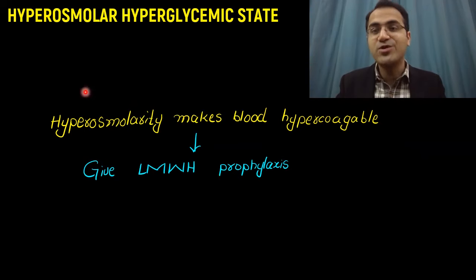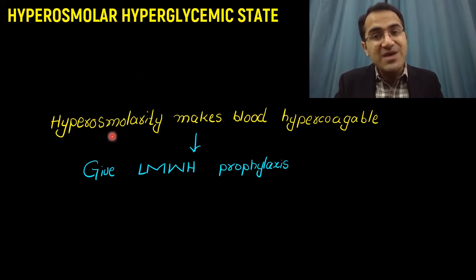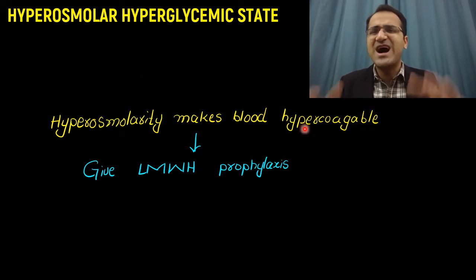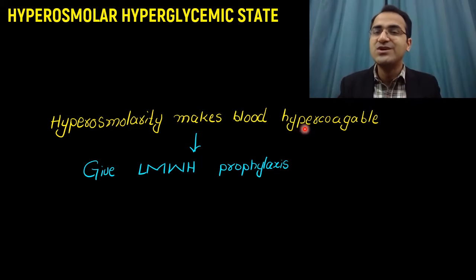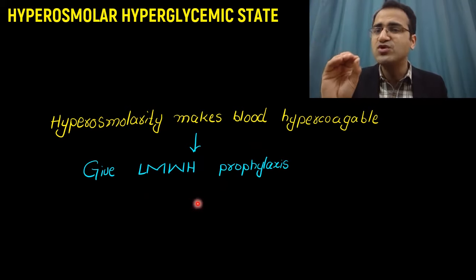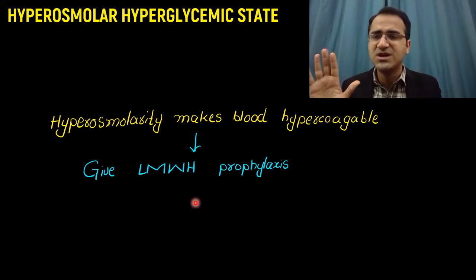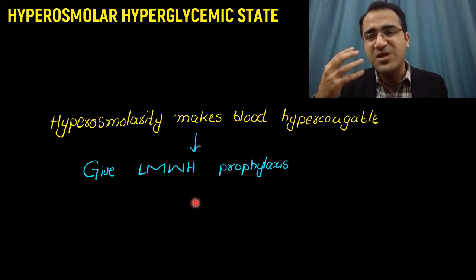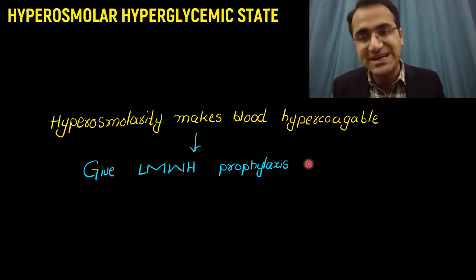An important point to remember in HHS: hyperosmolarity makes blood hypercoagulable because the blood is more viscous. So you have to give low molecular weight heparin to all patients except those with contraindications. You give heparin to prevent strokes and DVTs, because patients are in a hypercoagulable state when in HHS.